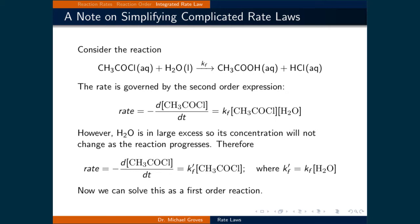Because of that, you can write a revised rate law expression: the negative D of the concentration of CH3COCl by DT is equal to some new rate constant K'F times the concentration of CH3COCl, where K'F equals the original rate constant KF times the concentration of water. Both values are now constants because we used a lot of water, so the concentration doesn't change. This is called flooding.